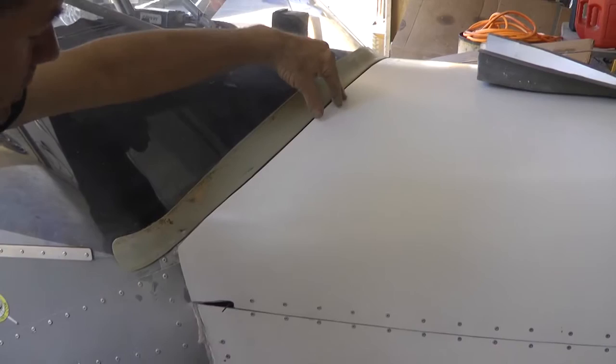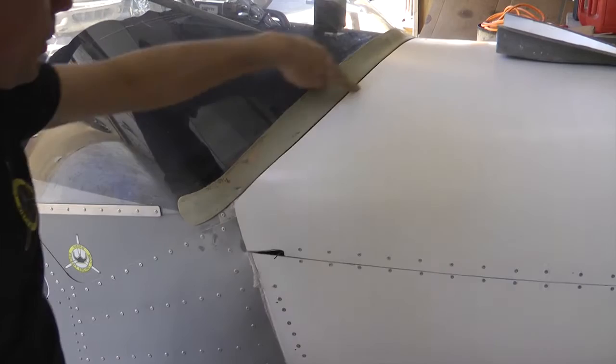But once we put a weather strip piece underneath here, so it doesn't, because the fiberglass is very abrasive, and it will wear into the aluminum.